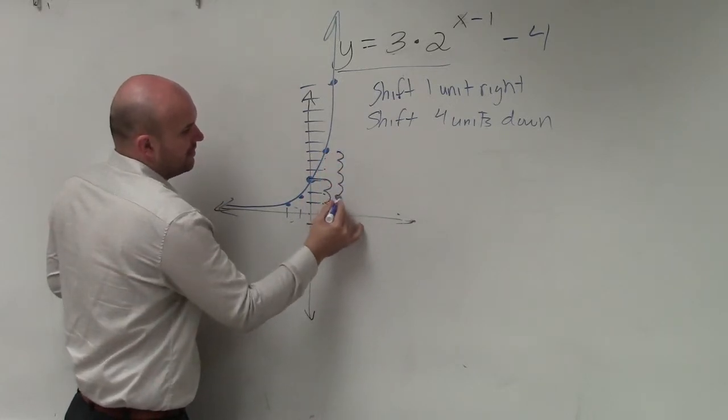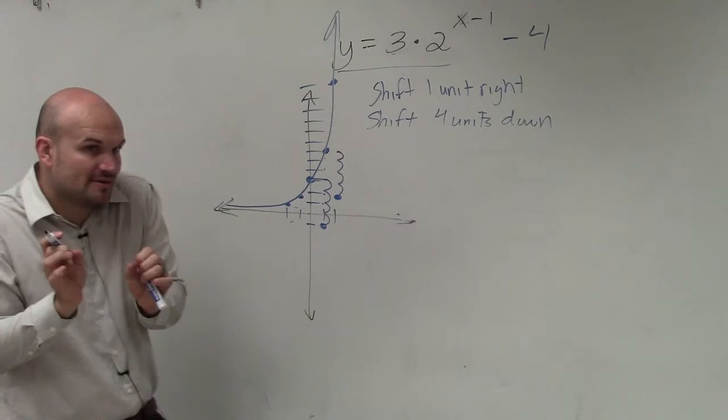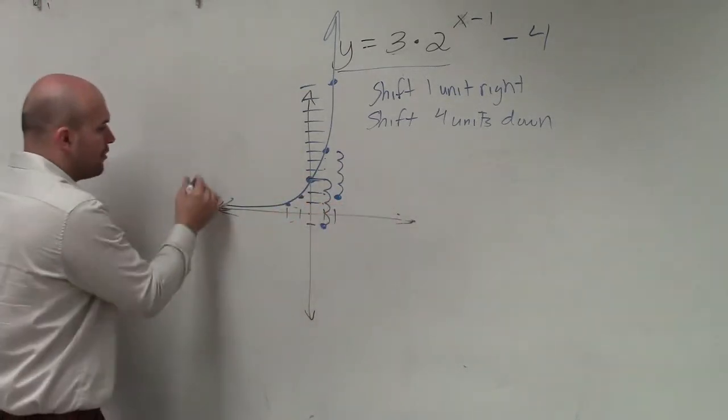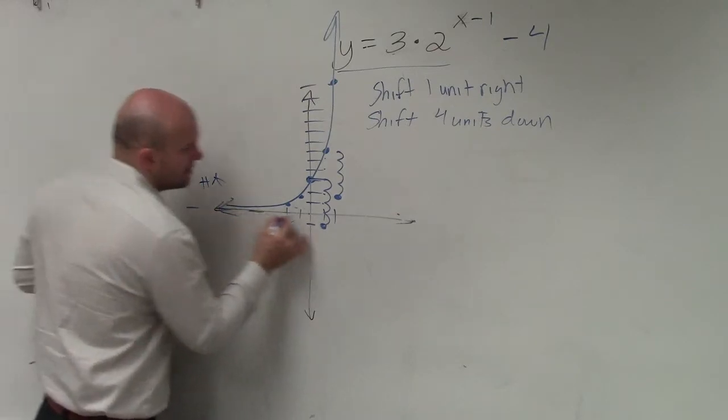1, 2, 3, 4. Then, the most important thing is the asymptote. Remember, the asymptote did not change. I have my horizontal asymptote at 0.